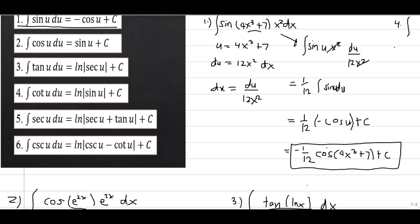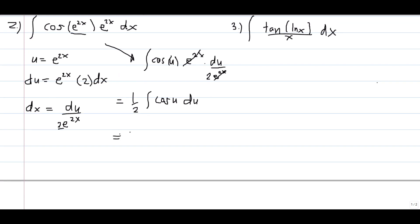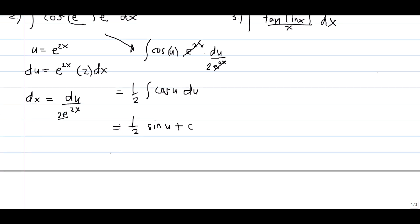The integral of cosine u du equals sine u plus C. Therefore we have one half times sine u plus C. Substituting back the equivalent of u, the final answer is one half times sine(e^(2x)) plus C.